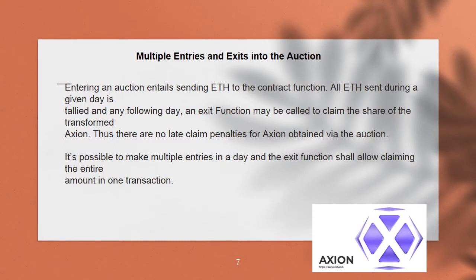Exit. Multiple entries and exits into the auction are possible. Entering an auction entails sending ETH to the contract function. All ETH sent during a given day is tallied, and any following day an exit function may be called to claim the share of the transformed Axion. Thus there are no late claim penalties for Axion obtained via the auction. It's possible to make multiple entries in a day and the exit function shall allow claiming the entire amount in one transaction.